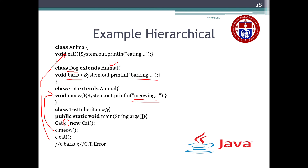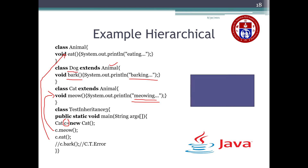If you try to call c.bark() using the Cat object, it will produce a compile-time error. For Dog you need to create a separate object. So the output for the Cat object is 'meowing' and 'eating'. If you want to print 'barking' as well, you need to create one more object for Dog and call the bark method using that object. Thank you.